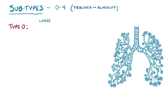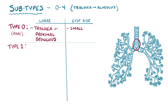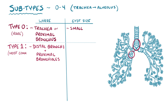Type 0 CPAMs develop at the trachea or proximal bronchus with small cysts, but are pretty rare. Type 1 CPAMs, which develop in the distal bronchi and proximal bronchioles, are the most common, and have one or more large cysts with tissue-like cartilage in between the cysts.